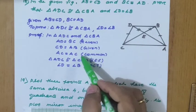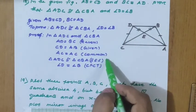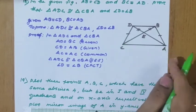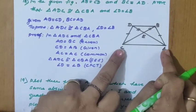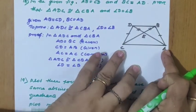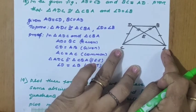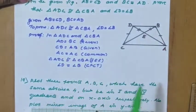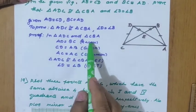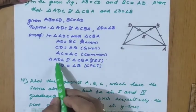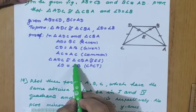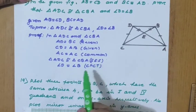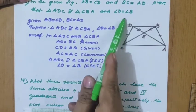Since AC is common to both triangles, and all three sides match, triangle ADC is congruent to triangle CBA by the SSS criteria. Now we have to prove angle D equals angle B, which follows by CPCT — hence proved.